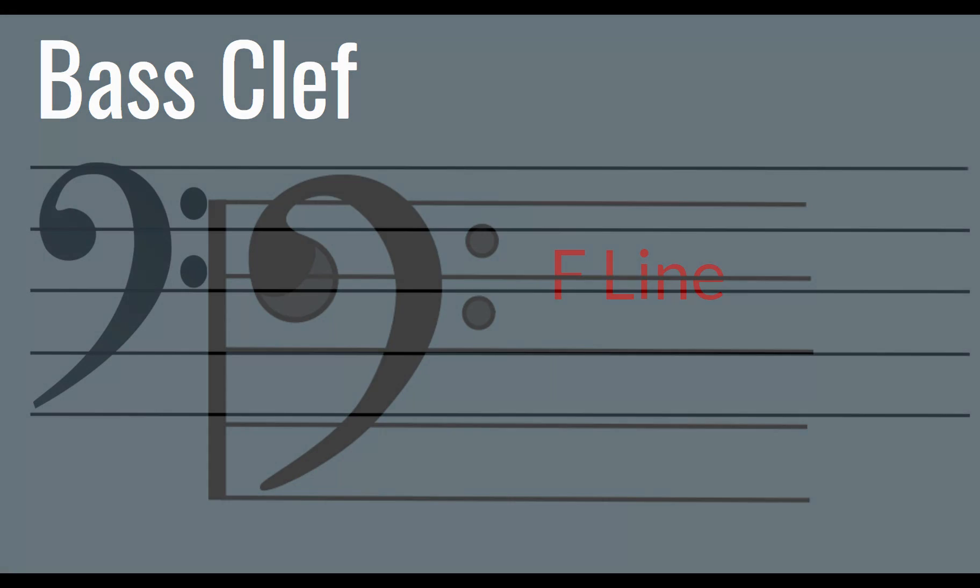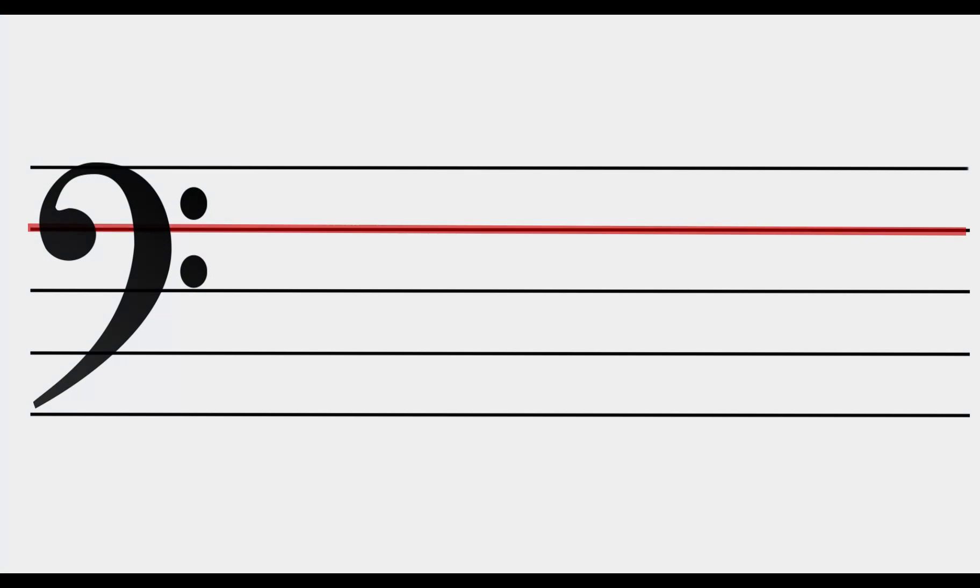Another review is that this symbol is our bass clef. We already know that. Its other name is the F clef because the dots go around the F line or on the F line. All right, we're going to highlight that F line again just to remind ourselves.